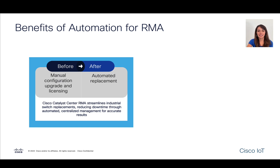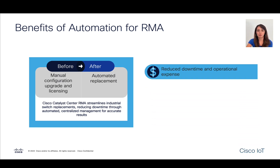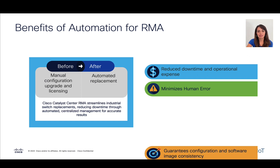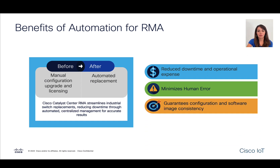Cisco Catalyst Center streamlines the replacement of industrial switches. By doing so, we will notice reduced downtime and operational expenses through faster replacements. We will minimize human error by automating manual tasks, and we will guarantee the configuration and image of the switch is consistent with the previous one.